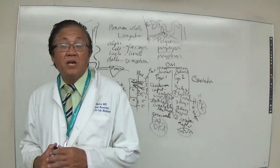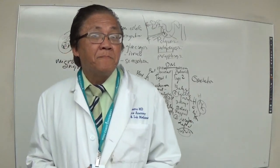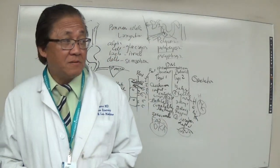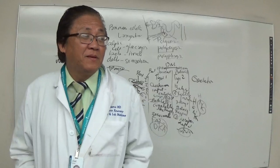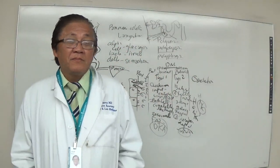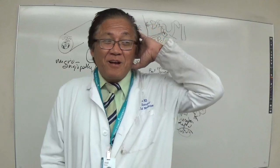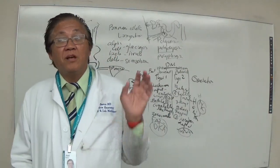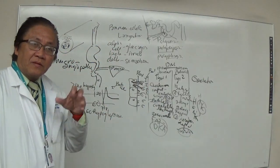Another problem, especially in men, is erectile dysfunction and impotence, due to the effect of diabetes on the parasympathetic nerves responsible for erection — the nervi erigentes. This is why controlling blood sugar and taking medications regularly is important for diabetic men.